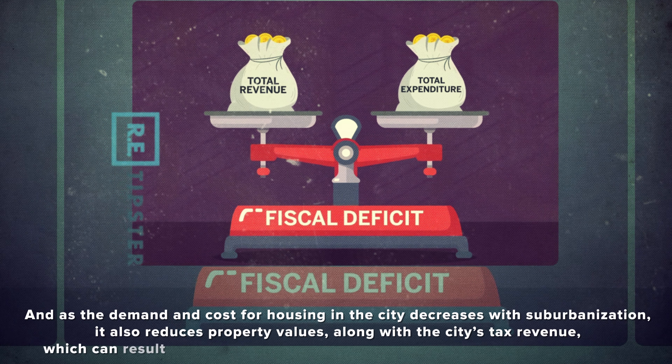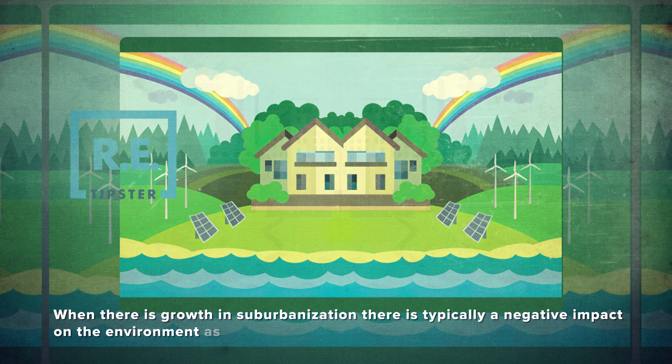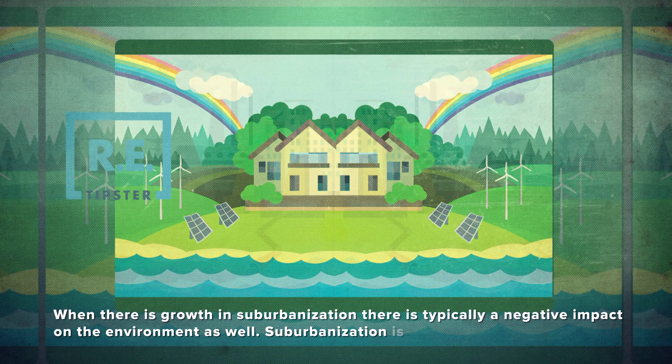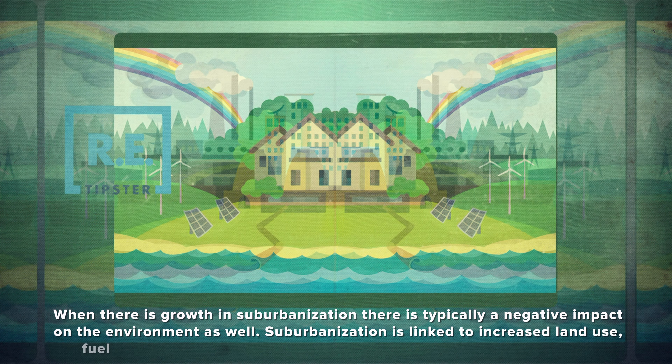And when there's growth in suburbanization, there's typically a negative impact on the environment as well. Suburbanization is linked to increased land use, fuel consumption, vehicle mileage, and overall energy consumption. It has also caused an increase in the release of greenhouse gases and an increase in the usage of water and oil.